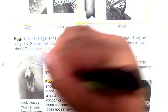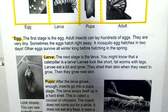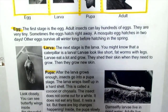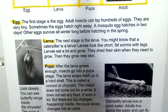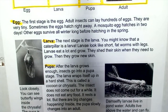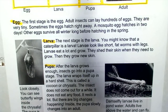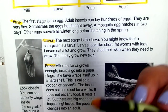After the larva grows enough, insects go into a pupa stage. The larva wraps itself in a hard shell. This is called a cocoon or a chrysalis. The insect does not come out for a while. It does not eat any food, it rests a lot. But there are big changes happening — inside the pupa slowly changes into an adult.